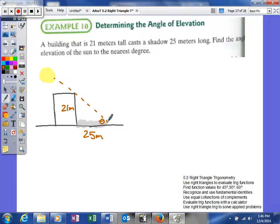Now that we've set up the problem, we identify what we know. Based on our angle, the opposite side is the building's height and the adjacent side is the shadow length.